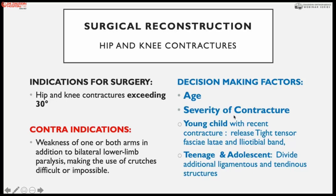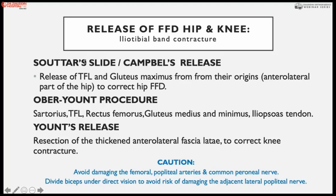In young children less than three to four years, surgery involves release of the tight tensor fascia lata and iliotibial band. When the child is teenage or older, we also divide ligaments, do posterior capsulotomy, and lengthen tendons. For hip contractures we do either Ober's fasciotomy or Campbell's release, where the tensor fascia lata and gluteus maximus are released from their origin to correct the flexion and abduction deformity of the hip joint.